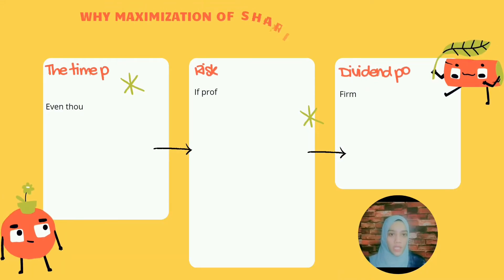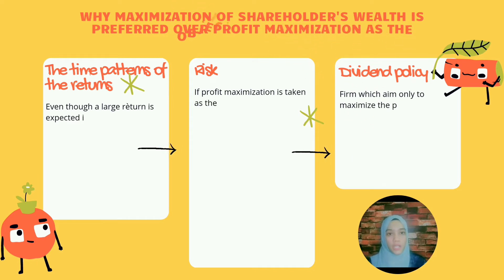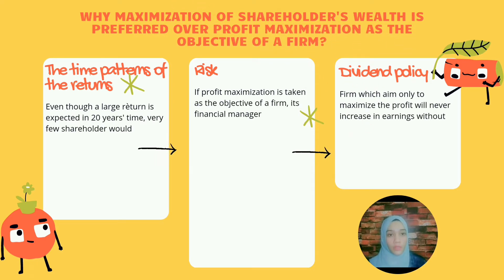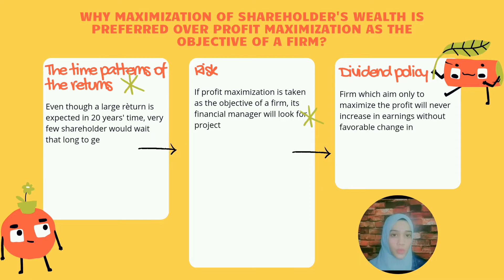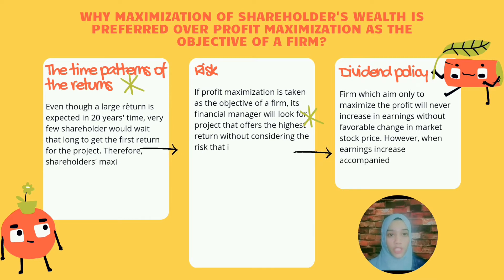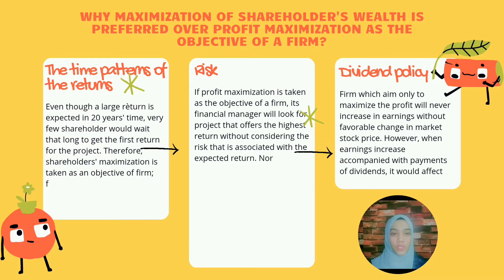Why is maximisation of shareholder wealth preferable over profit maximisation as the objective of a firm? Number one, the time patterns of the return. Even though a large return is expected in 20 years' time, very few shareholders would wait that long to get the first return for the project. Therefore, shareholder wealth maximisation is taken as an objective of a firm. A manager must also consider the time pattern of the return.